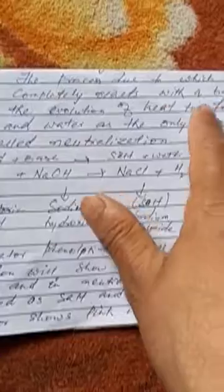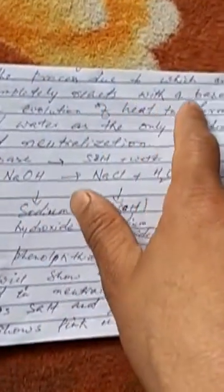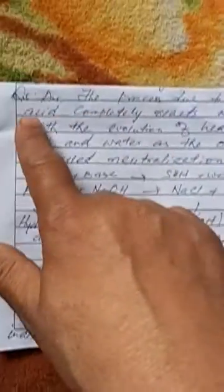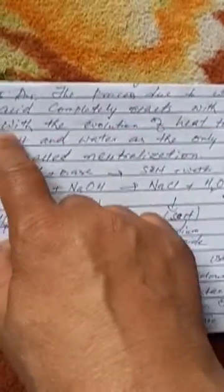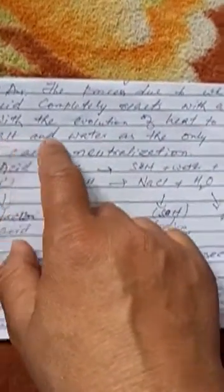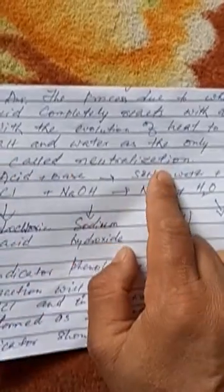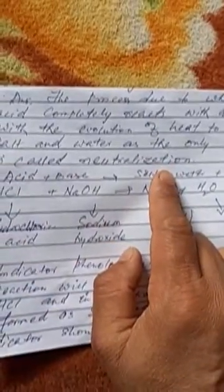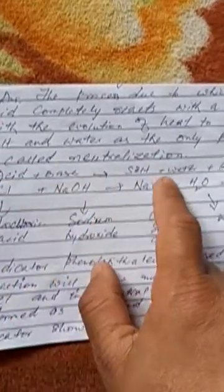Neutralization is the process due to which an acid completely reacts with a base with the evolution of heat to form salt and water as the only products. This is called neutralization. The equation is: acid plus base gives salt plus water plus heat.